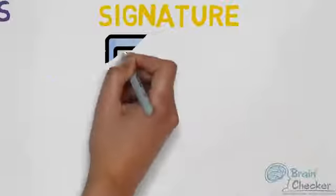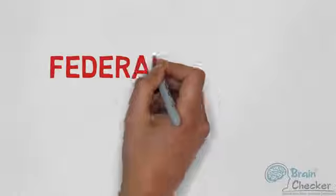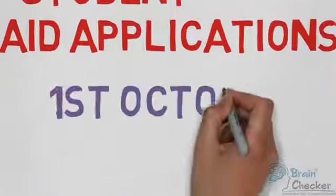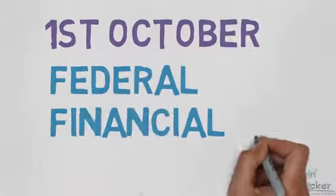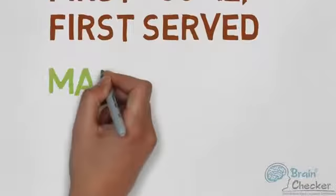Submit your FAFSA as soon as possible. Federal Student Aid applications can be submitted starting on October 1 at FAFSA.gov. Federal Financial Aid is awarded on a first-come, first-served basis, so know your deadlines and apply as early as you can to maximize your financial aid.